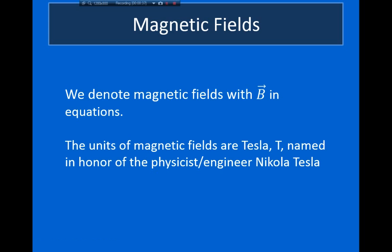When we talk about magnetic fields, we denote them with capital B. Magnetic fields, just like electric fields, are vectors — they have magnitude and direction. The units we use are Teslas, named in honor of physicist and engineer Nikola Tesla. Another common unit is Gauss, which equals 10 to the minus 4 Tesla.